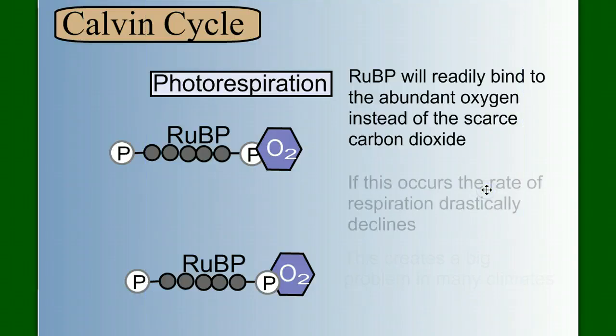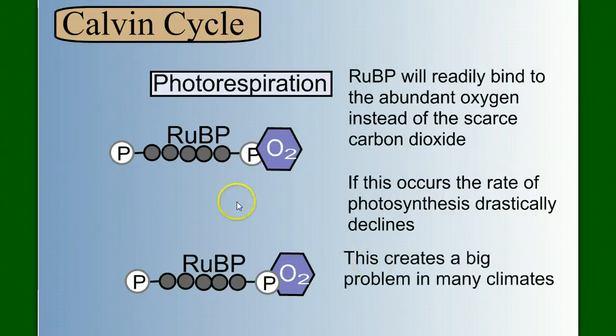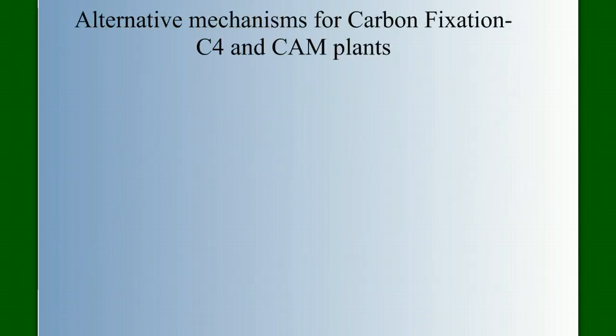Photorespiration is when RuBP binds to the oxygen instead of the carbon dioxide. If this occurs, the rate of photosynthesis is going to drastically decline because RuBPs are bound to oxygen and are not available to bind to the carbon dioxide. And this can create a problem in many climates where the temperatures are really hot and the air is really dry. So we need alternative mechanisms for carbon fixation.